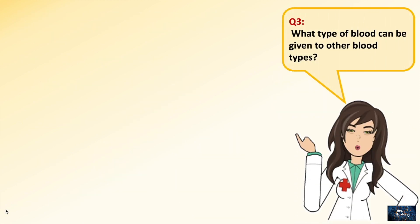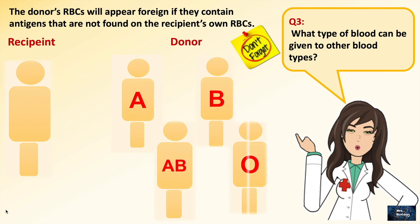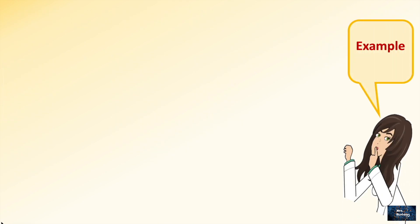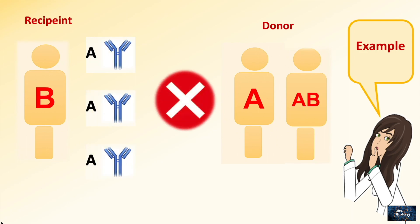The third question: what type of blood can be given to other blood types? Before answering, don't forget the rule — the donor's RBCs will appear foreign if they contain antigens not found on the recipient's RBCs. For example, a recipient of blood type B cannot receive blood from donors having blood type A or AB, because these donors have the A antigen on their RBCs which is absent in the recipient. If transfused by error, the recipient's immune system will mount an immune response as explained before.